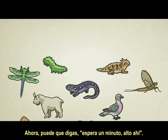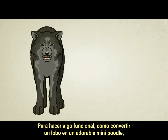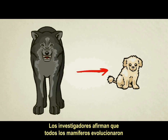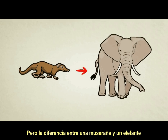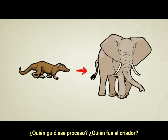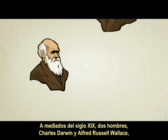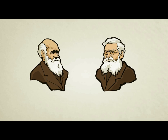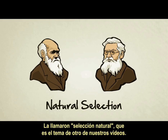Now, isn't evolution random? To do something functional like turn a wolf into an adorable mini poodle, random evolution had to be carefully guided by an intelligent dog breeder. Researchers claim that all mammals evolved from an ancient shrew-like creature, but the difference between a shrew and an elephant is far greater than that of a wolf and a poodle. Who guided that process? Who was the breeder? In the mid-1800s, two men — Charles Darwin and Alfred Russell Wallace — independently discovered that a breeder is not necessarily needed. There is another force capable of guiding random evolution to produce order and complex function. They called it natural selection, which happens to be the entire topic of our next video.